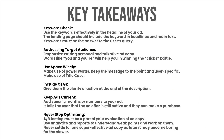How to write Google ad copy — key takeaways. Keyword check: use keywords effectively in the headline of your ad; the landing page should include keywords in headlines and main text; keywords must answer the user's query. Addressing target audience: write personal and conversational ad copy — words like 'you' and 'your' will help you win the clicks battle. Use space wisely with power words; keep the message to the point and user-specific; make use of title case. Include CTAs and give clarity of action at the end of the description. Keep ads current by adding specific months or numbers to tell users the offer is still active. Never stop optimizing — A/B testing must be part of your evaluation; use analytics and reports to address weak points; never settle for one ad copy as it may become boring.